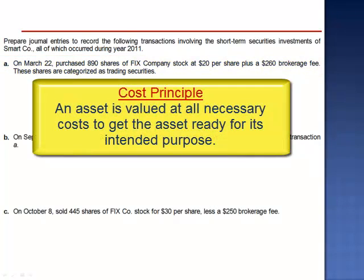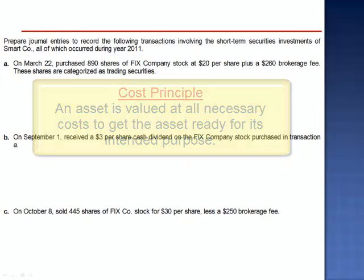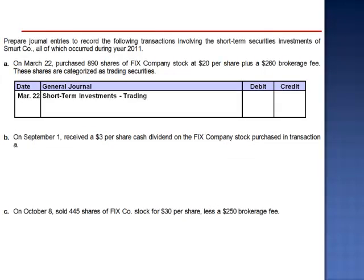The cost principle requires that all assets, including investments, be valued at all necessary costs to get the asset ready for its intended purpose. The brokerage fee is a necessary cost, therefore we will include it in the basis of the investment. We debit the investment account, short-term investments — trading — $18,060, which is 890 shares multiplied by $20 per share, $17,800, plus the $260 brokerage fee, and credit cash.